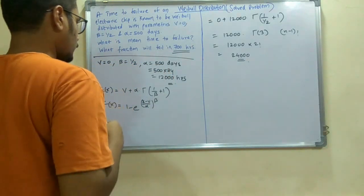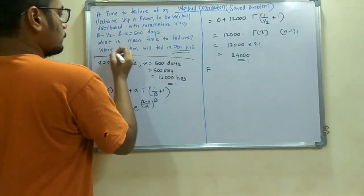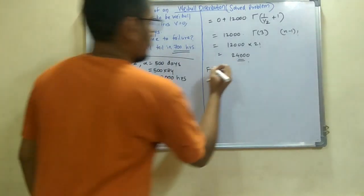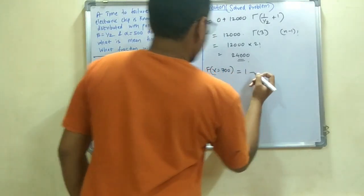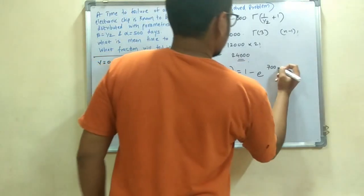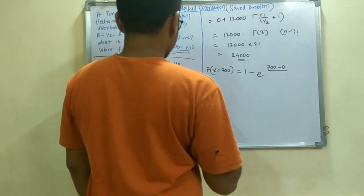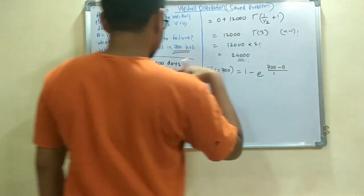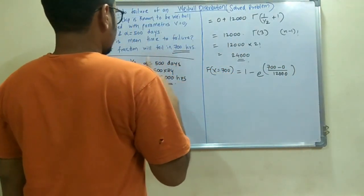Next with this mean, we will calculate F(x). Now they are asking what fraction will fail in next 700 hours. So here we have the value of x as 700. So F(x) at 700, we have 1 minus e raised to minus (x, that is 700, minus v, that is 0) divided by alpha. We have alpha as 12,000, raised to beta, and the beta value is half.